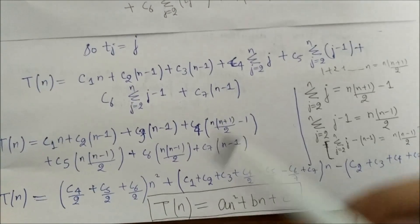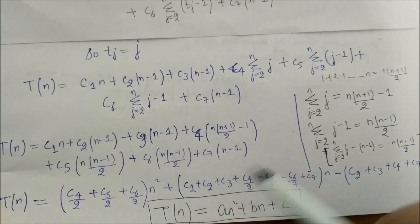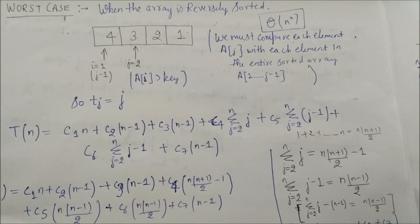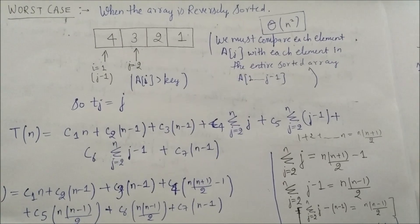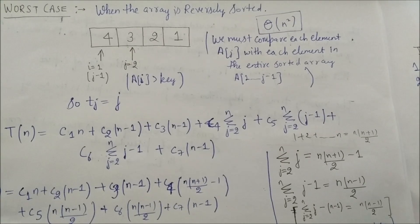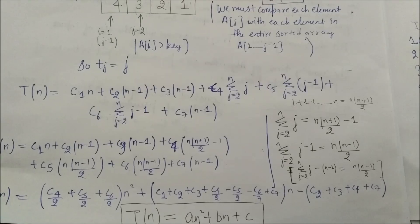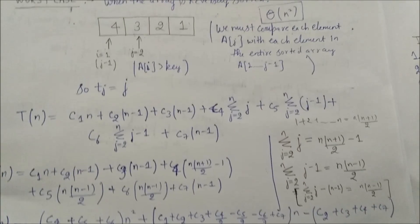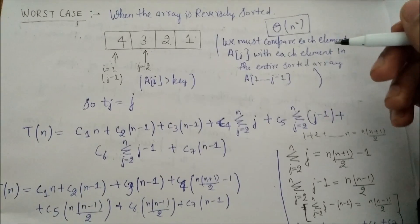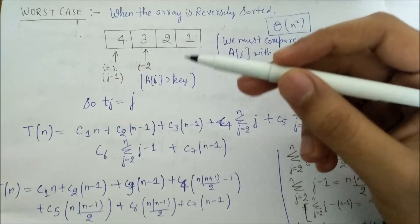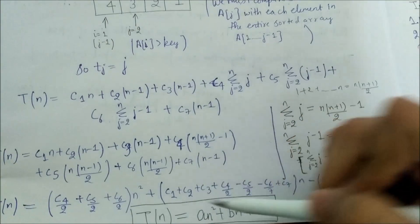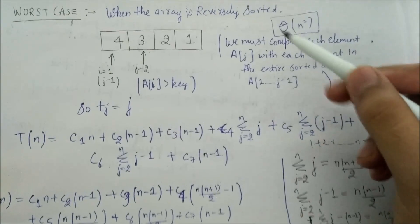In the worst case, the running time of insertion sort is a quadratic function of n. Since the worst case gives an upper bound on running time — we can't do worse — insertion sort is O(n²). The average case is equally bad: tj = j/2 also yields a quadratic result, so insertion sort is Θ(n²) overall.